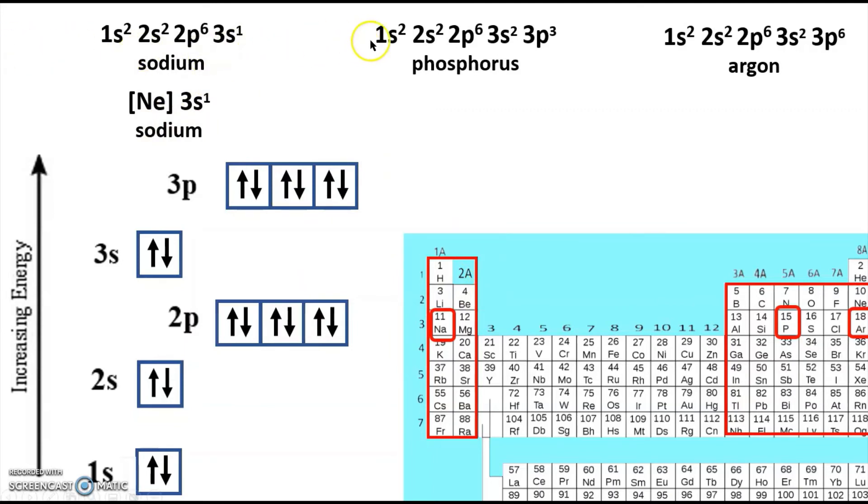Same way with phosphorus. We've got right here, this is the electronic configuration for neon. So all we have to do is put neon and then 3s2, 3p3, which is the part that's unique to phosphorus. Same thing for argon. We have the electron configuration for neon right there. So we just write it down that way and then write out the part that's unique for argon, 3s2, 3p6. That turns out to be a fairly handy shortcut.